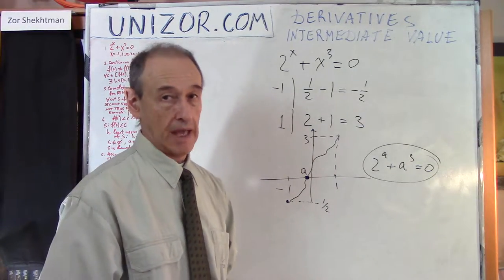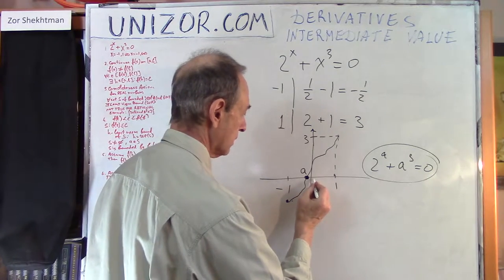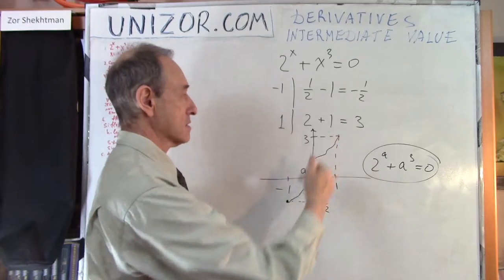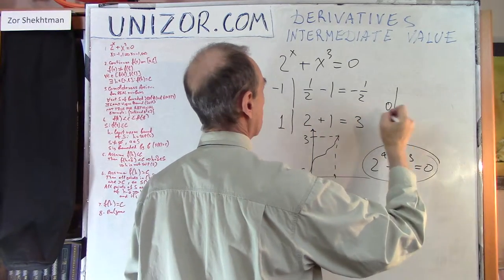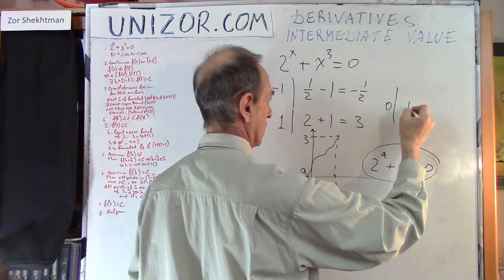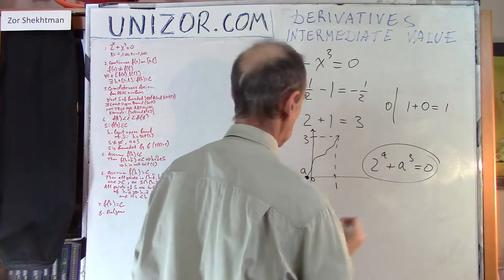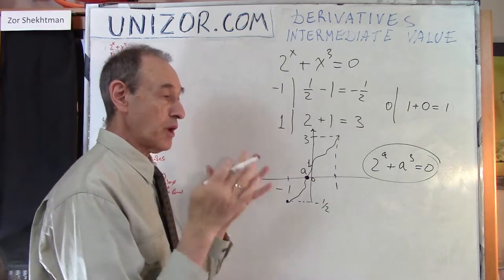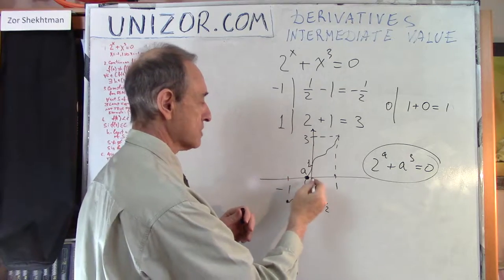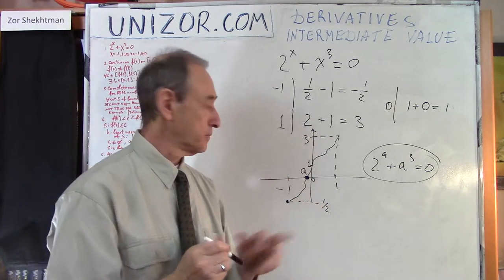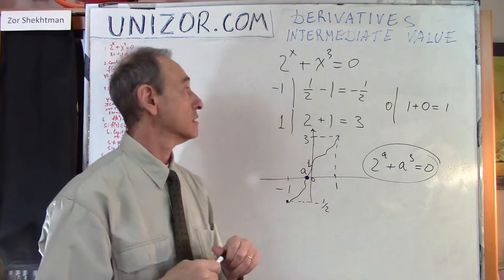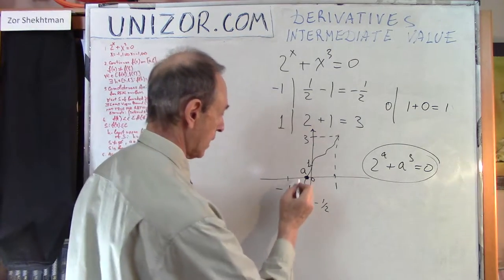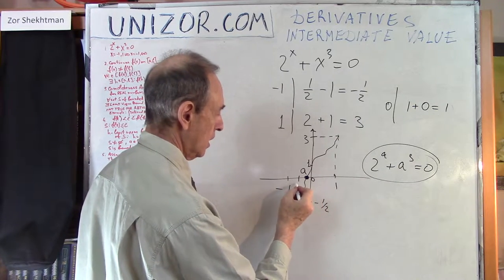Let's divide this segment in half, so the midpoint is 0, and analyze what is the value of this function at the midpoint - is it negative or positive? Put 0 and you get 2 to the power of 0, which is 1, plus 0 to the power of 3, which is 0, giving 1. So it's still positive. Now we have a narrower interval from minus 1 to 0 where we know our root is located. We've narrowed it. Can we do better? Of course. Let's divide again by half, from minus 1 to 0, giving minus one-half.